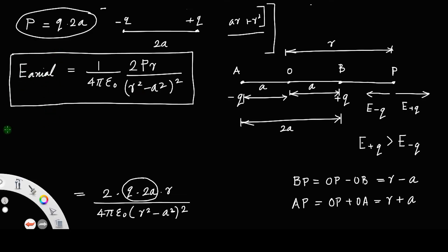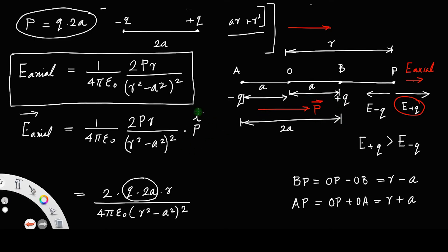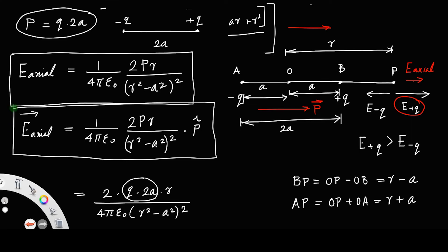Now writing this in vector form: the direction of dipole moment is from minus q to plus q. The net axial electric field is in the same direction as the dipole moment. So the vector form is E_axial = (1/4πε₀) · 2pr / (r²−a²)² · p-hat, where p-hat is the unit vector in the direction of the dipole moment.